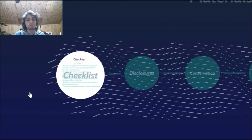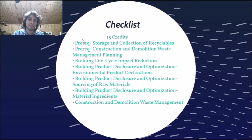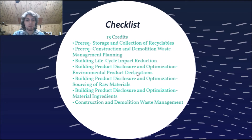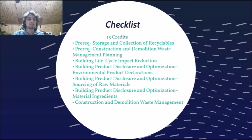As we head to the checklist, we have a prereq of storing and collecting recyclables, as well as managing construction and demolition waste. For the actual credits, we have building life cycle reductions, building product disclosures and optimization, product disclosures and optimization for raw materials, and the same thing for material ingredients, as well as construction and demolition waste management. This goes along with establishing our baseline performance and then meeting our targets to gain that credit.